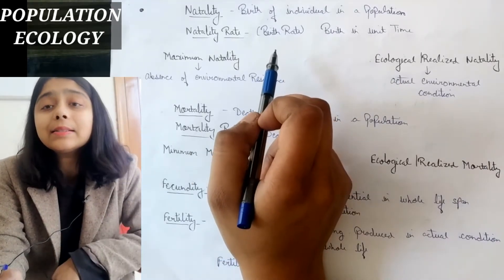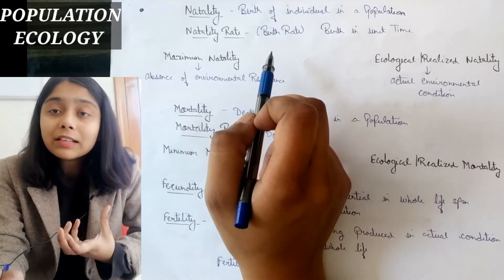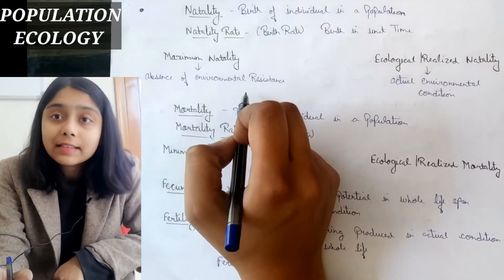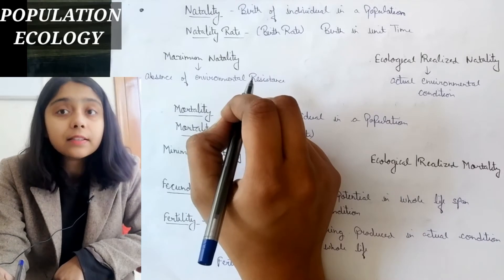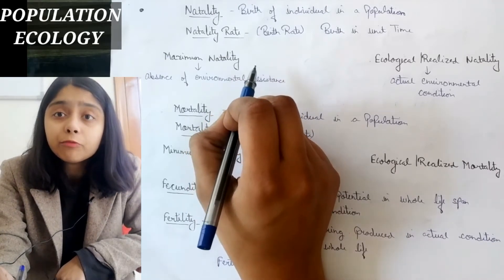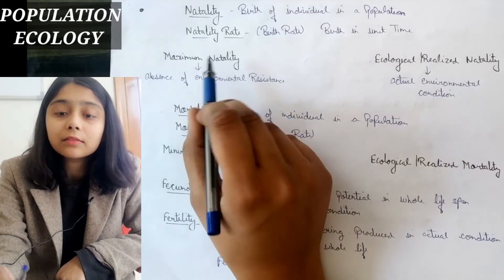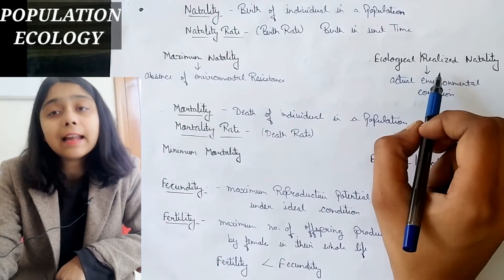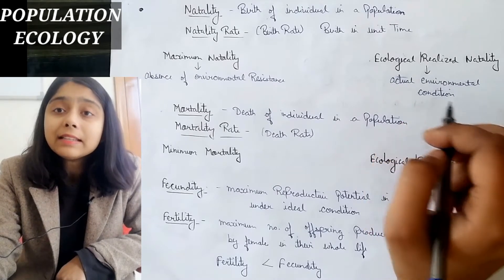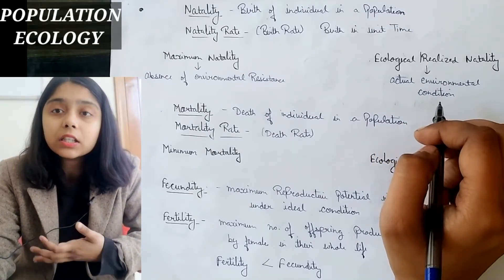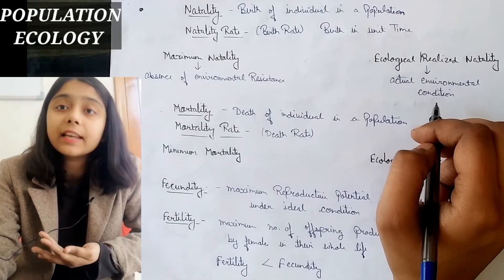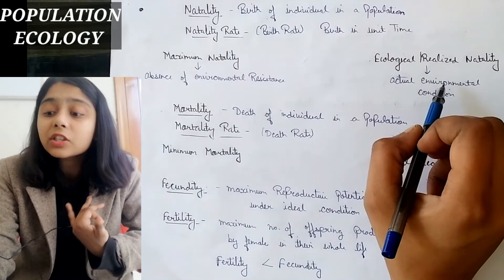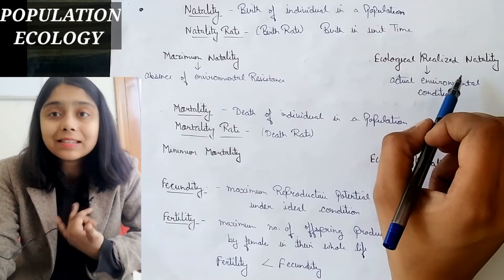Maximum natality means how many individuals can be born when there is an absence of environmental resistance — that is maximum natality. Ecological and realized natality means under actual normal environmental conditions, how many individuals can be born — that is ecological and realized natality.